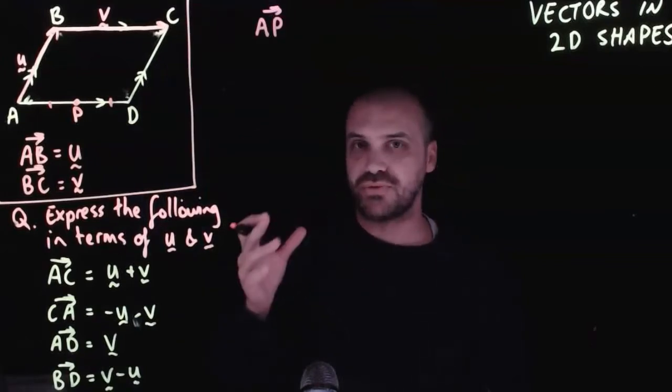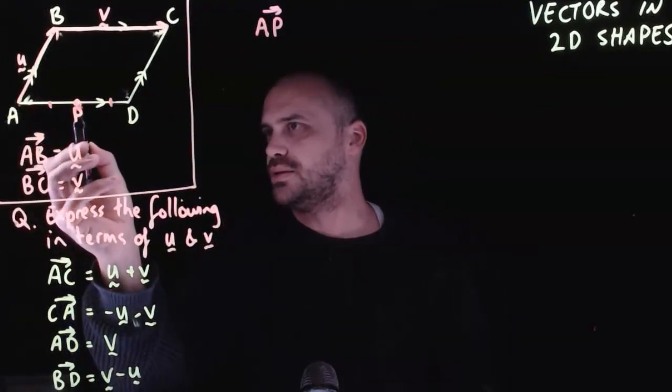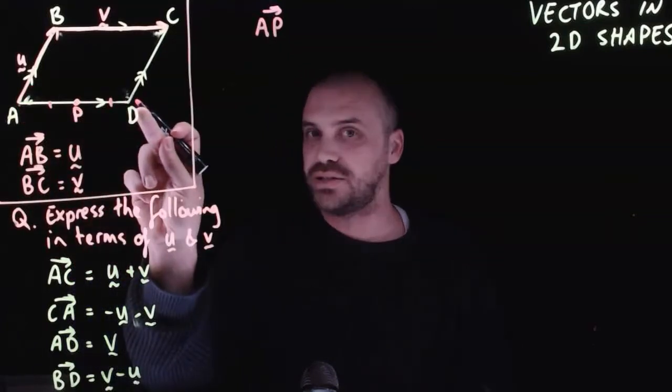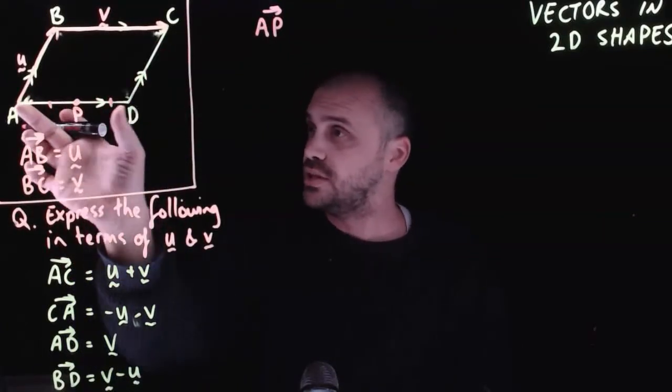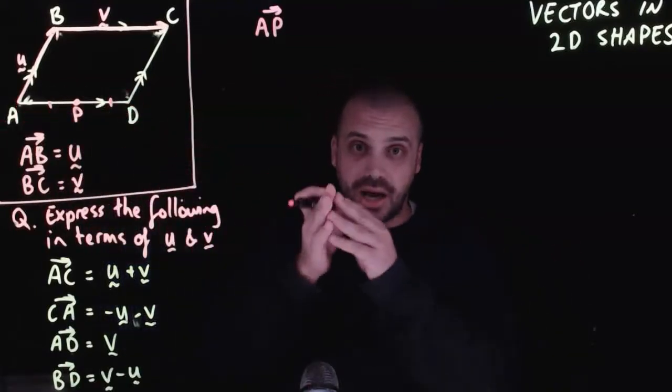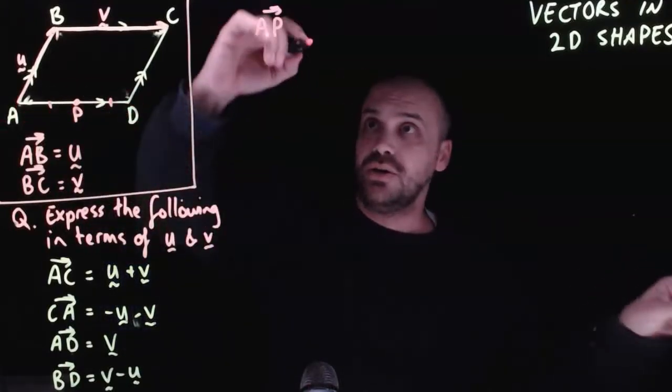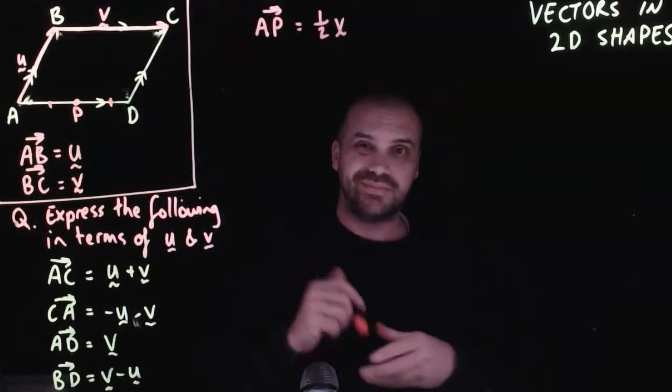So what about vector AP? How can we express that in terms of U and V? Getting from A to P, we're traveling along this vector here, which is vector V. We know that's V because that's V. And we're only going half of the way. So we're only going halfway along vector V, which is half vector V.